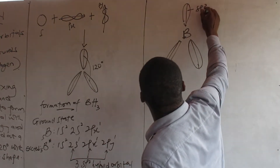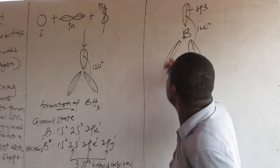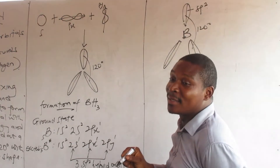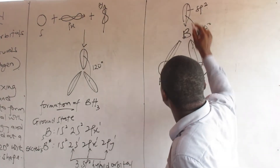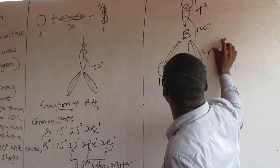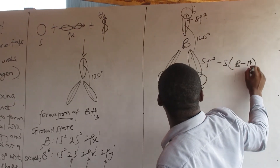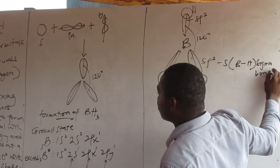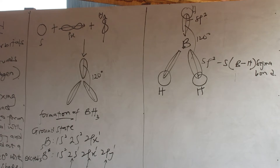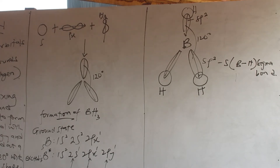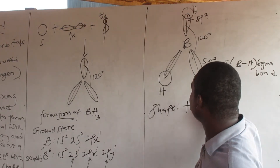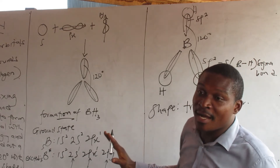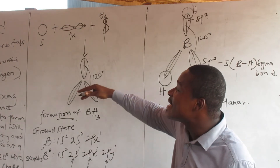So one is called sp3. Now each sp2 hybrid orbital overlaps axially with the s orbital from a hydrogen atom to form a boron-hydrogen sigma bond, separated at the bond angle of 120 degrees, with the shape being trigonal planar.